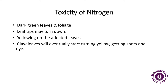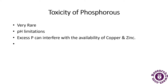First we will discuss some major macronutrients, then we will come to the micronutrients. In the toxicity of nitrogen, there will be dark green leaves and foliage, leaf tips may turn down, yellowing on the affected leaves, and claw leaves which start turning yellow and develop spots and die.